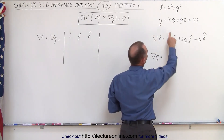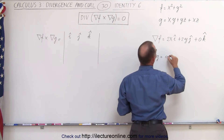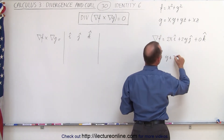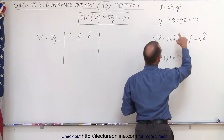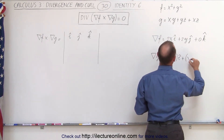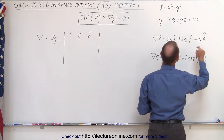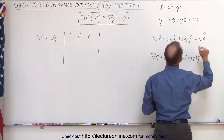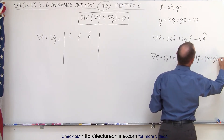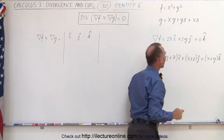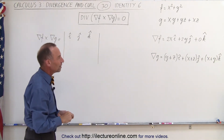Now do the same for the second scalar function. The partial derivative with respect to x gives us y plus z in the i direction, plus the partial with respect to y gives us x plus z in the j direction, plus the partial with respect to z gives us x plus y in the k direction. So now we have the gradient of f and the gradient of g.